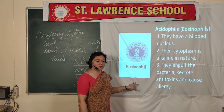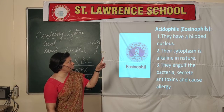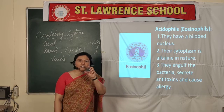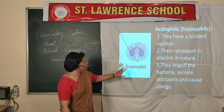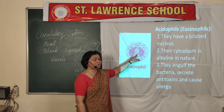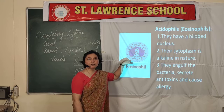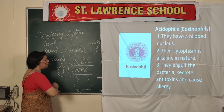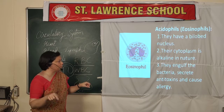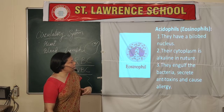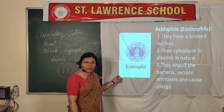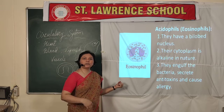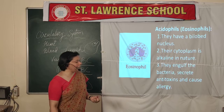Now we come to granulocyte types. The first is eosinophil, also known as acidophil. They are distinguished by the structure of their nucleus — in the eosinophil, they have a bilobed nucleus, meaning the nucleus appears as two lobes though it is not actually divided. The cytoplasm is alkaline in nature, which is why they are called acidophil. They secrete antitoxins which kill germs and cause allergy responses.